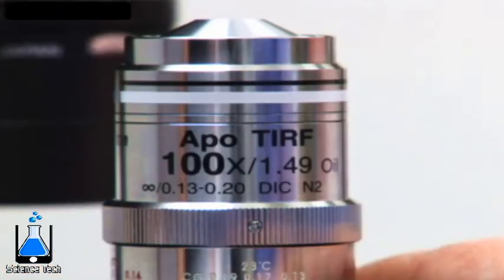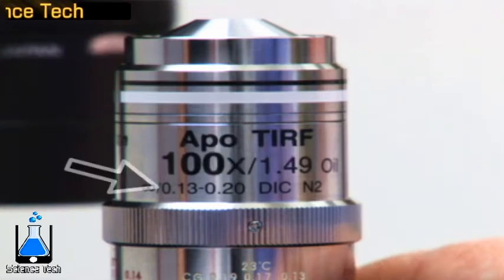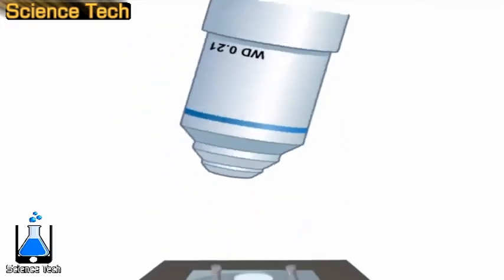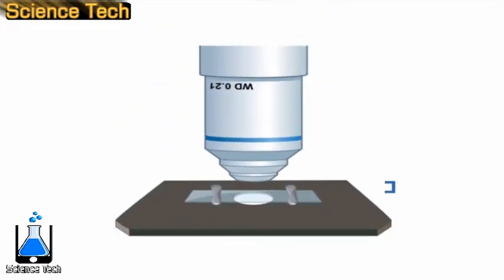An objective can be marked with the magnification, the numerical aperture or NA, the type of immersion medium required, the cover slip thickness that should be used when mounting samples, and the working distance, the distance from the tip of the lens element to the focal plane in the sample.